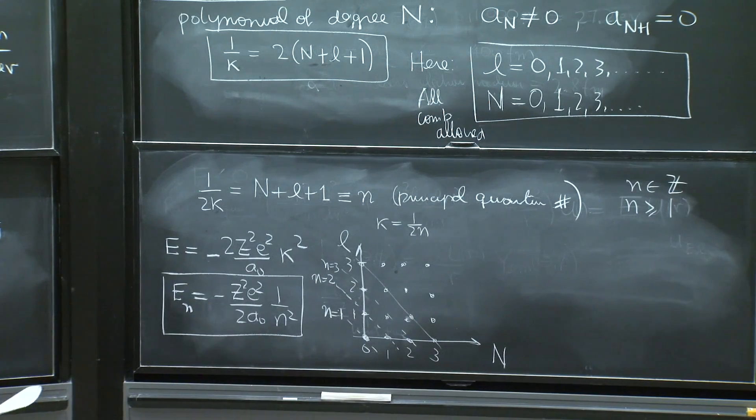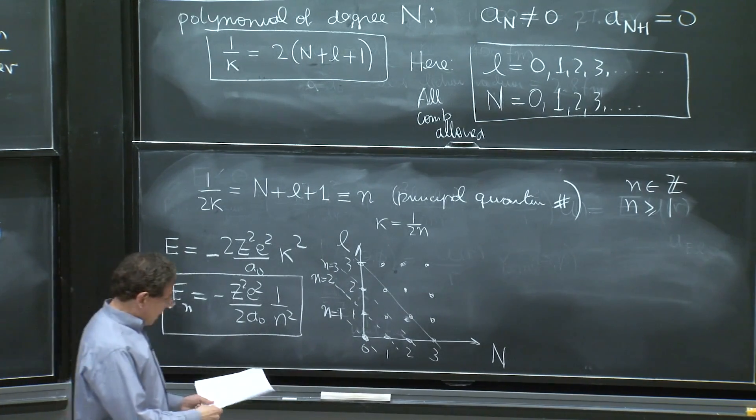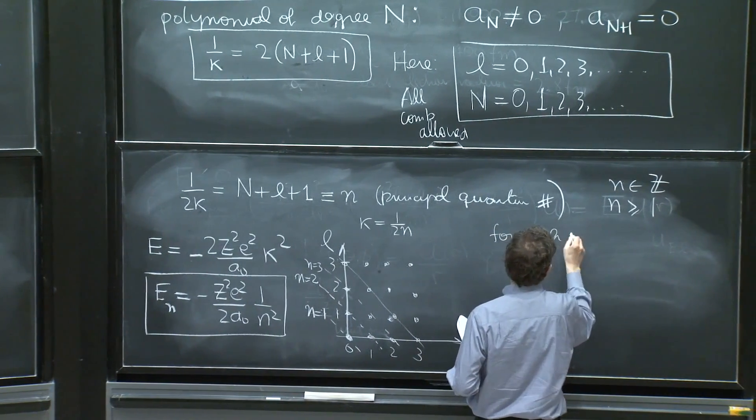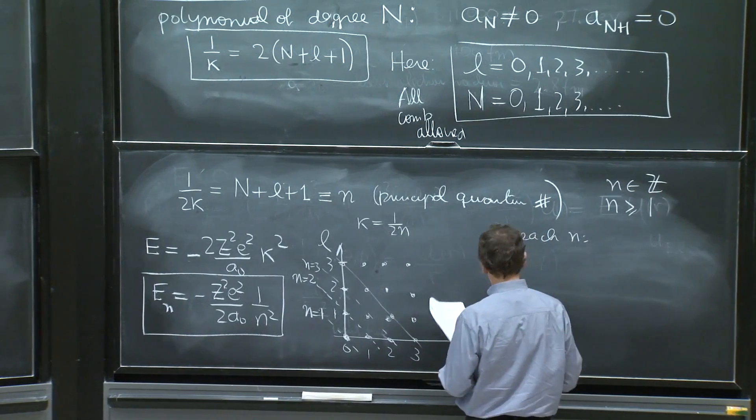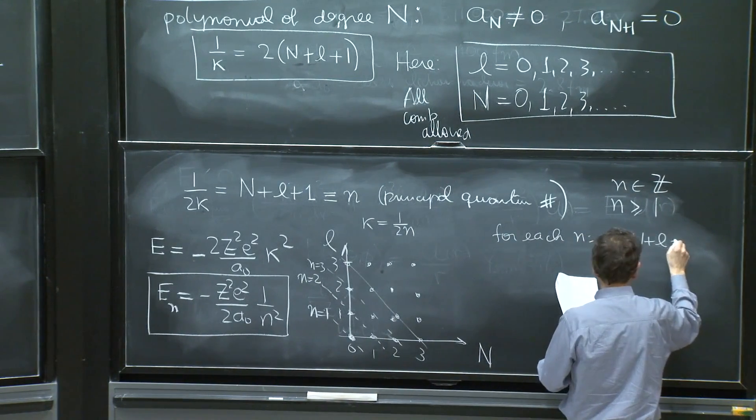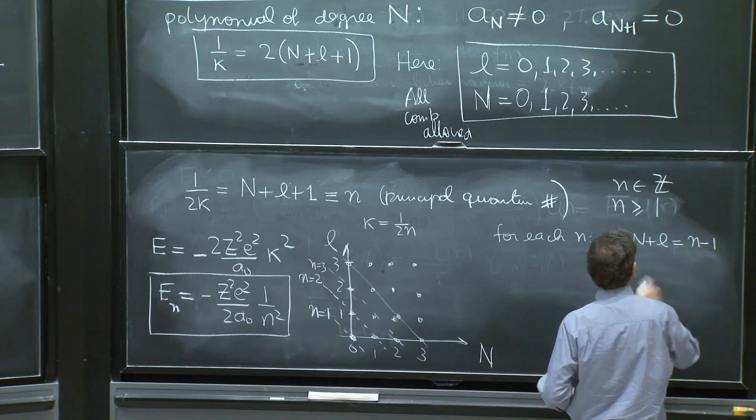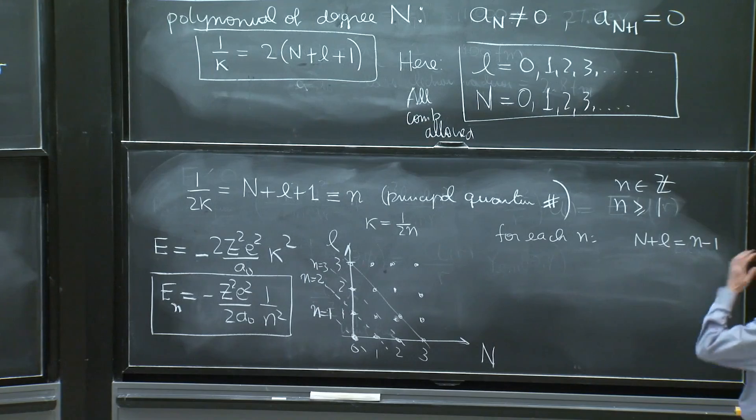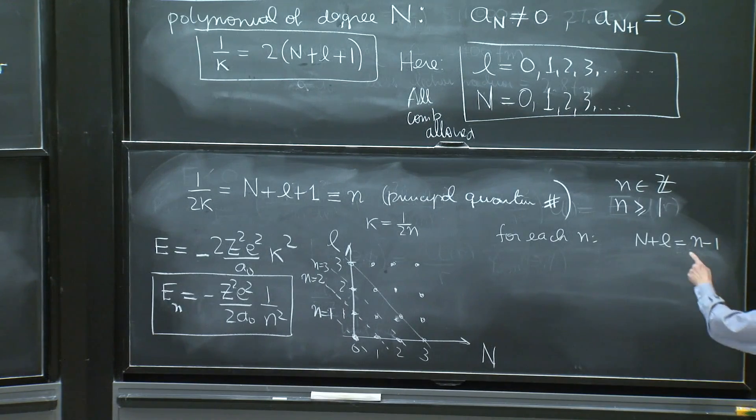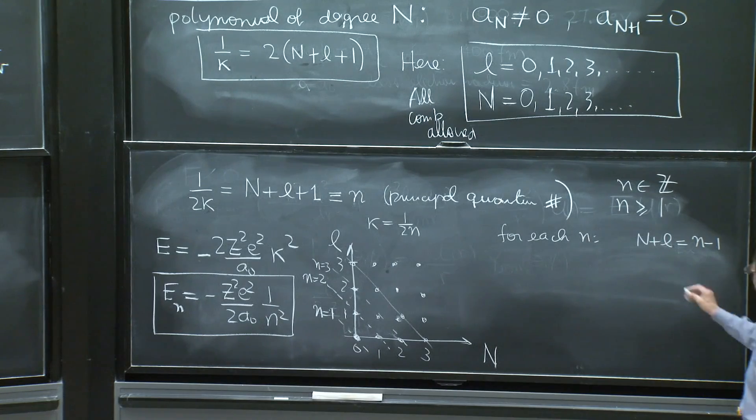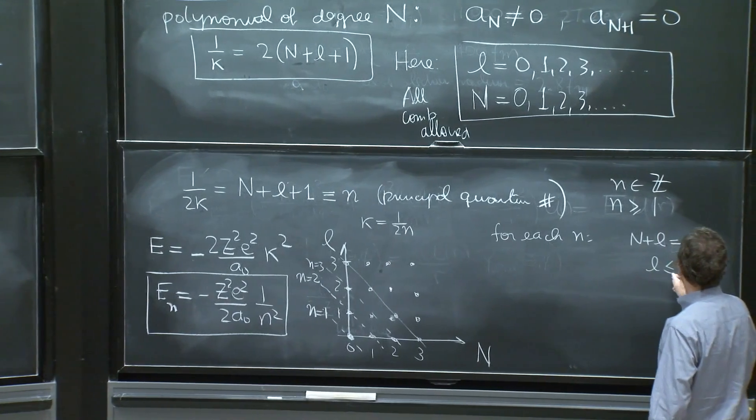So for each n, you have that n plus l is equal to n minus 1.